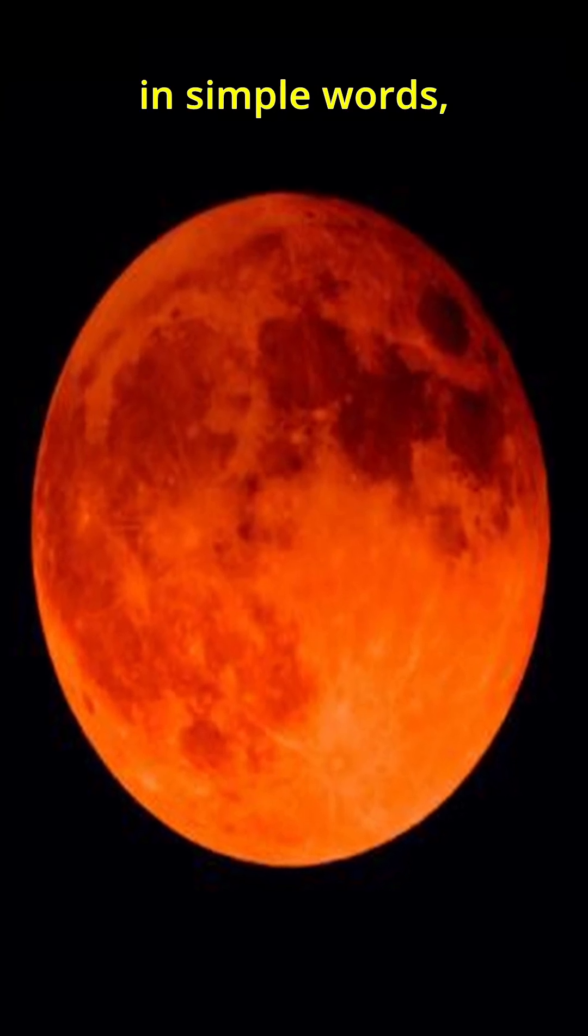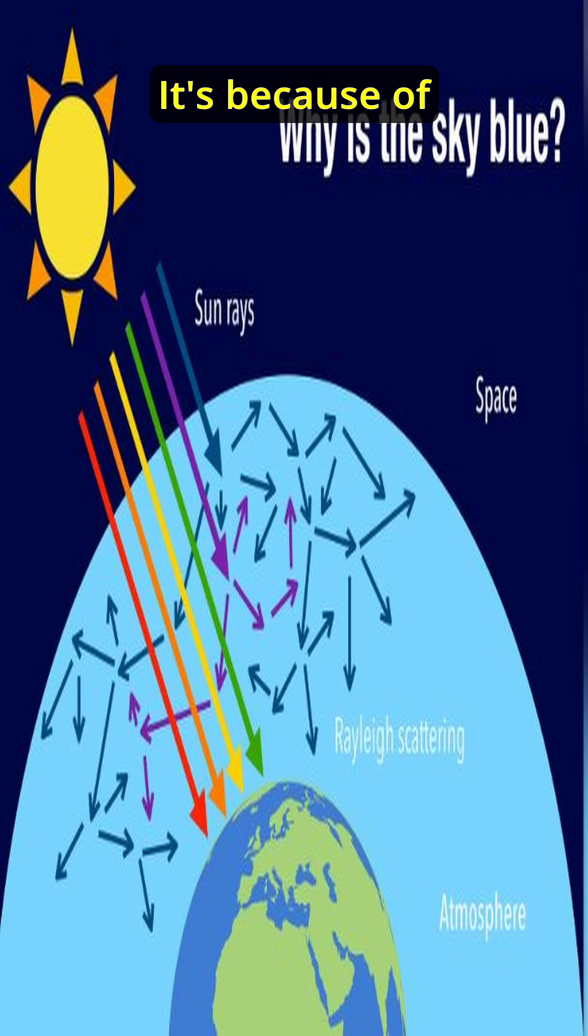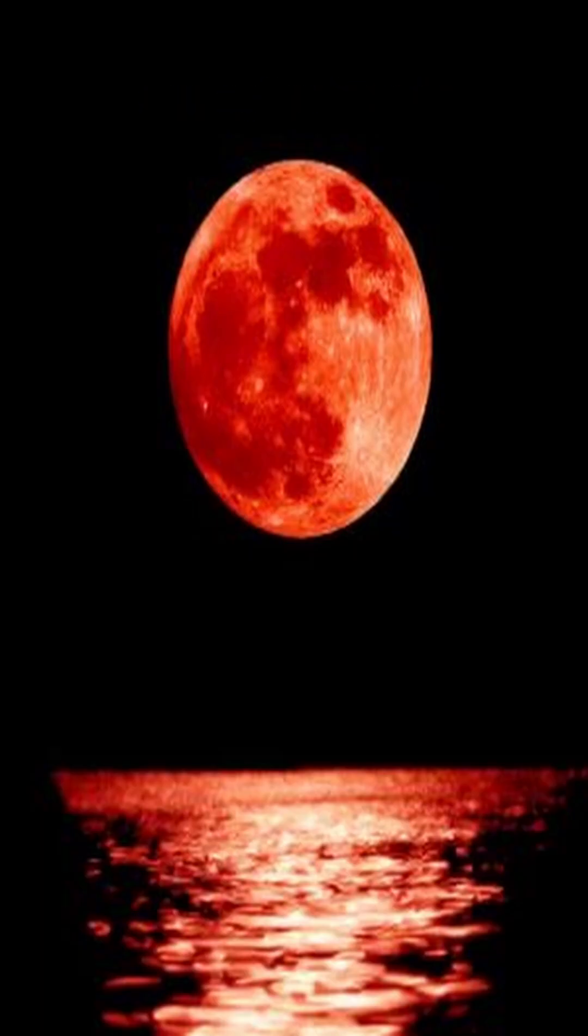To put it in simple words: Why does the sky look blue? It's because of Rayleigh scattering of shorter wavelength light. Why does the moon look red during the lunar eclipse? Because only longer red wavelength reaches the moon through earth's atmosphere.